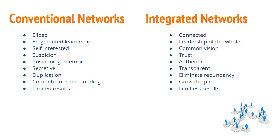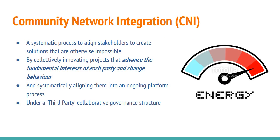CNI doesn't seek to replace existing network collaborations — it simply assists in connecting and optimizing them. Community network integration takes existing networks and transforms them so they work better for everybody. It's a systematic process to align stakeholders to create solutions that are impossible otherwise — solutions to things like economic prosperity, health, and environmental sustainability. By aligning stakeholders in a state of cooperation, it's possible to take collective action, usually in the form of scalable pilot projects that advance everybody's interest, and to create a platform of ongoing alignment over time — all under a third-party governance structure where no one organization owns or runs the process.